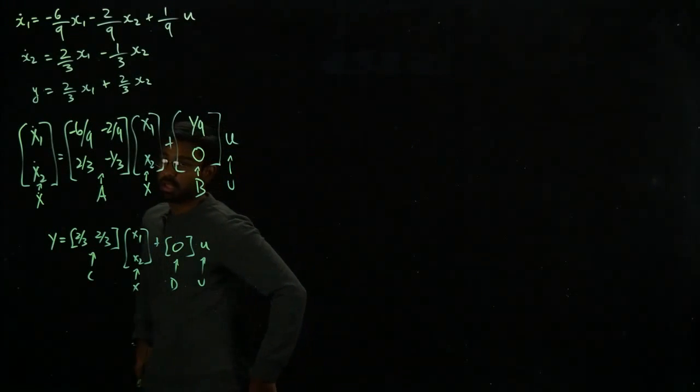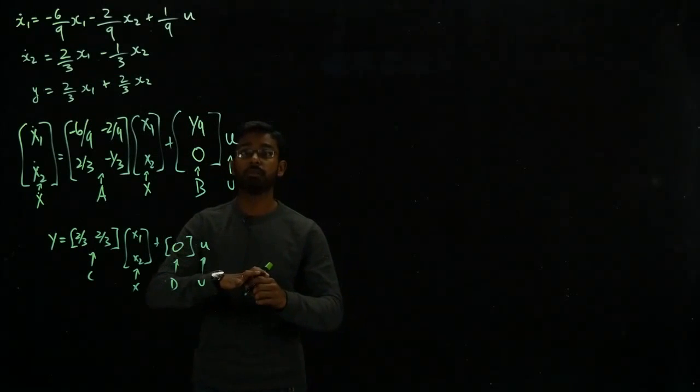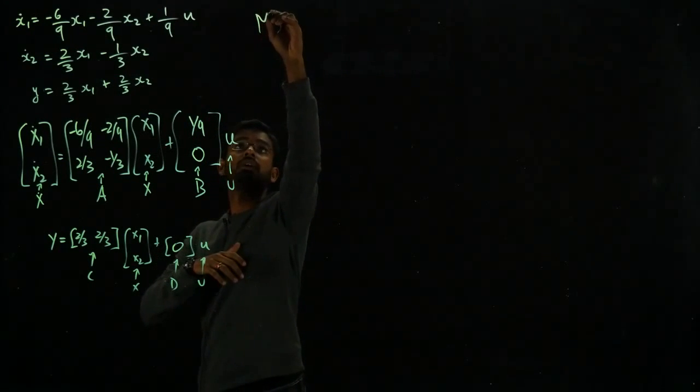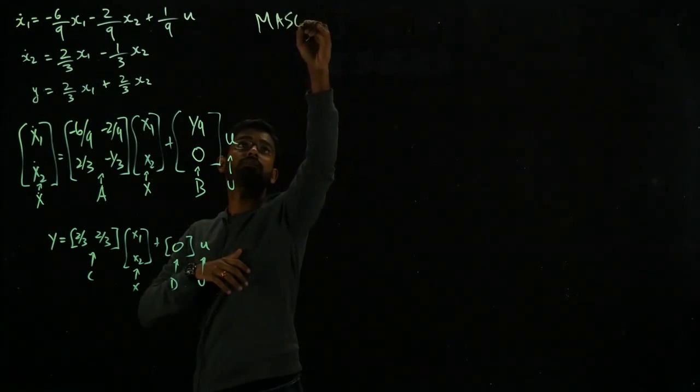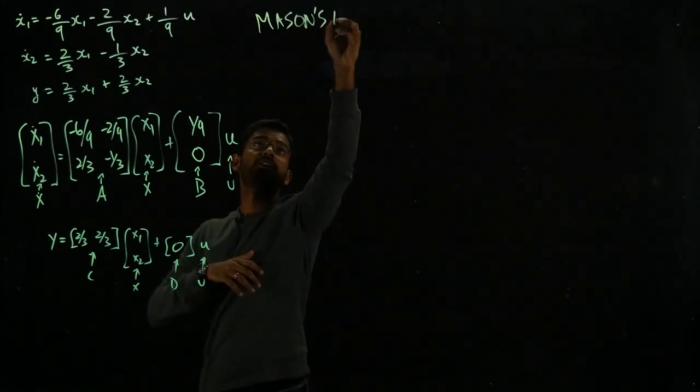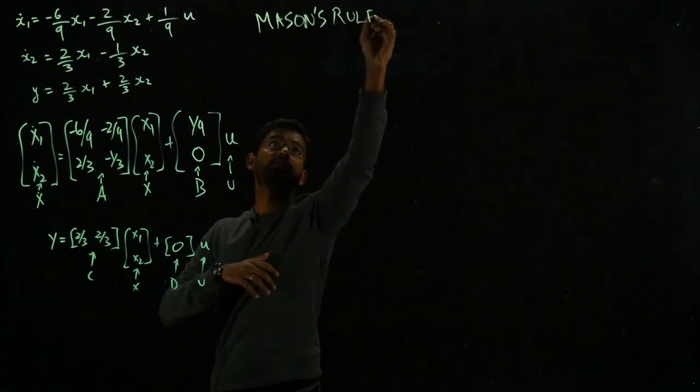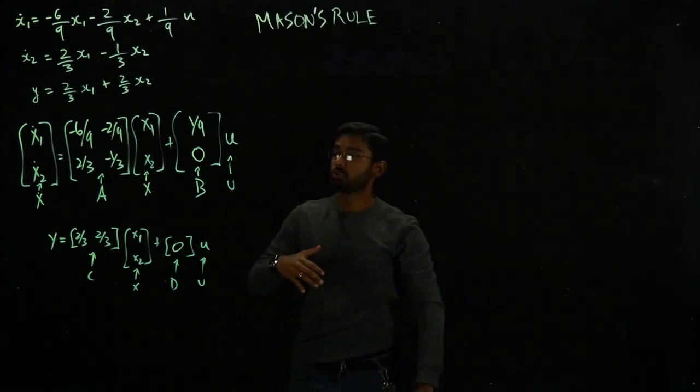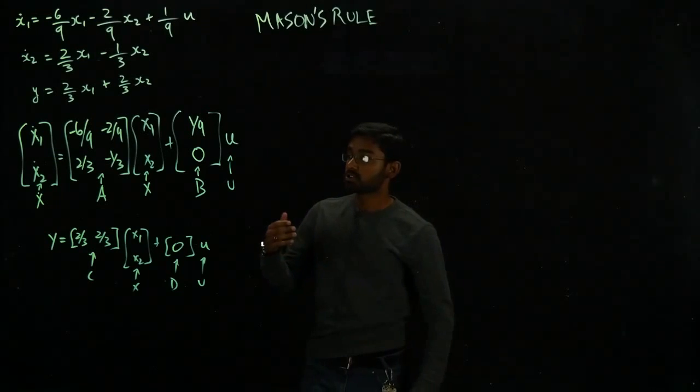Now we have this. Now let's use what is called Mason's rule. Why do we need to use this? We need to go back to a representation that's called transfer functions. Basically you can represent systems using state space equation, using signal flow graphs, and also using transfer functions.